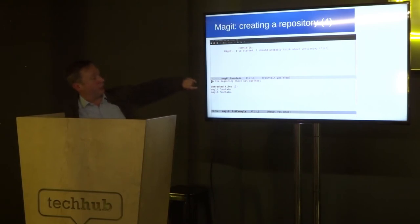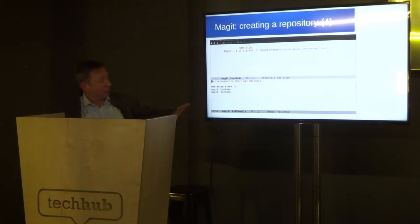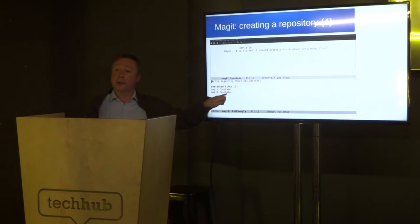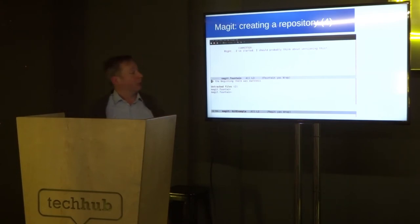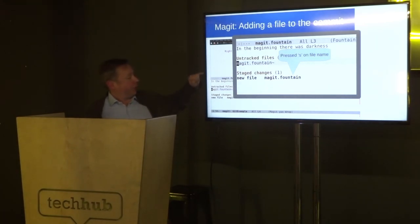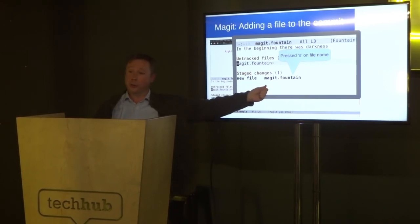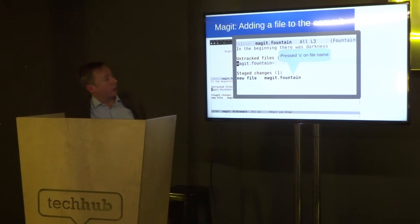So just to say — in this folder there are two files. The file I'm editing is called magic.fountain. There's also another file with a tilde after it, which is Emacs's backup file — whenever you're editing a file, Emacs creates a backup with a tilde. I've put my cursor on the file I'd like to add to the repository and pressed S, which stages the file. You can now see untracked files and staged changes — it's a menu-driven system, and my staged changes show the new file I wanted to add.